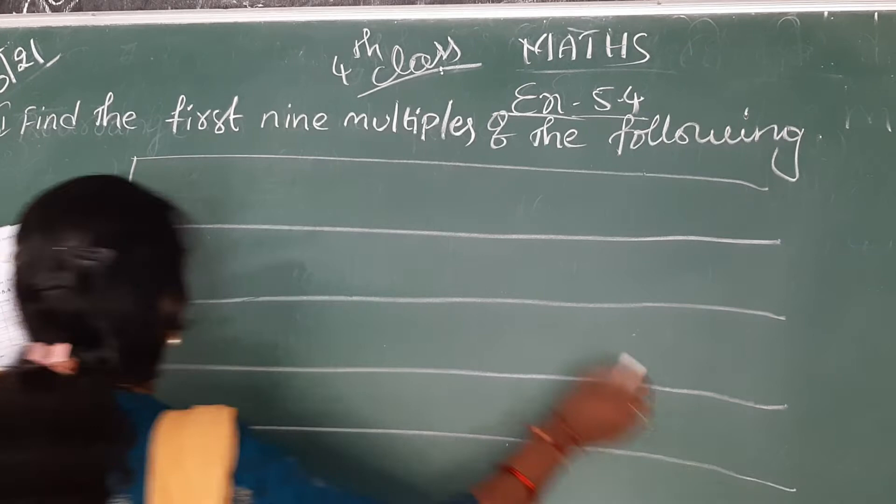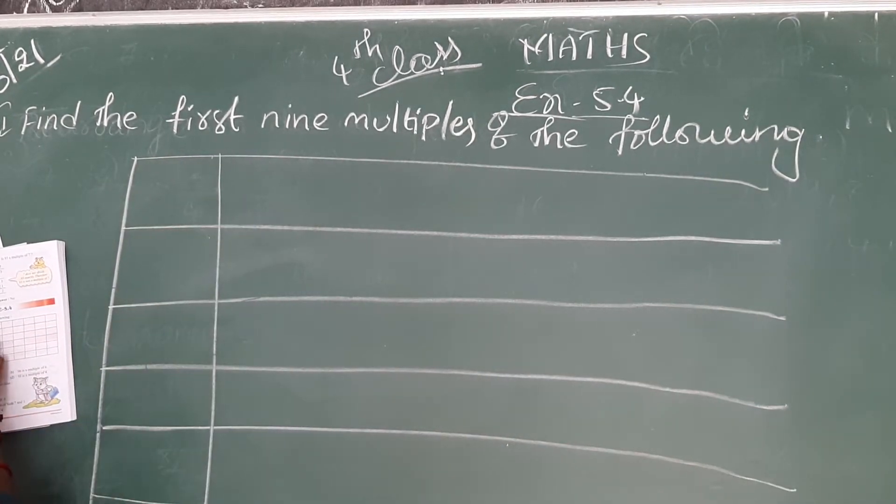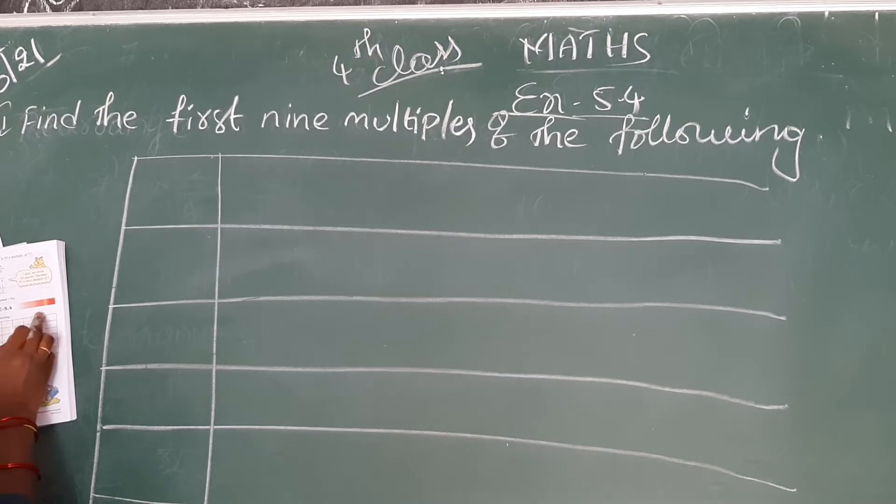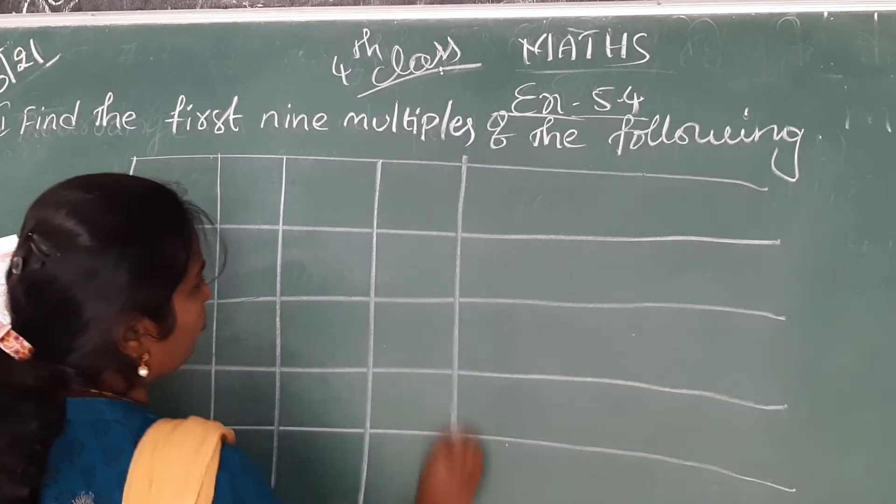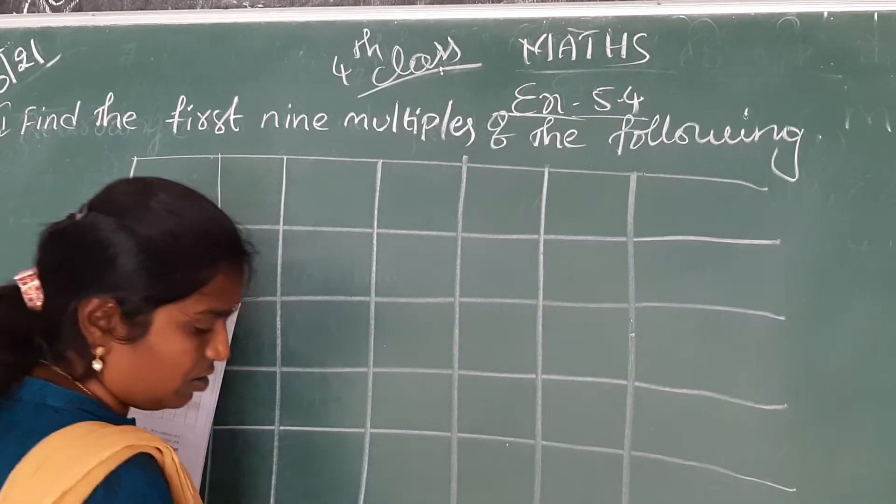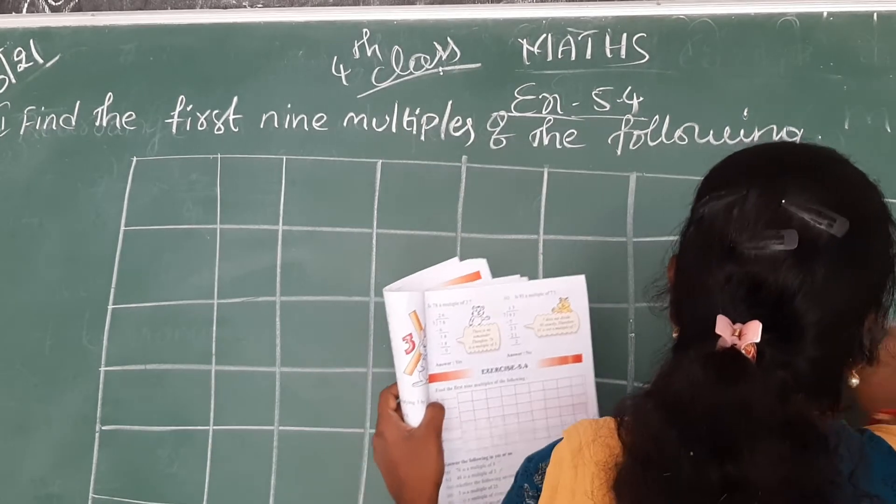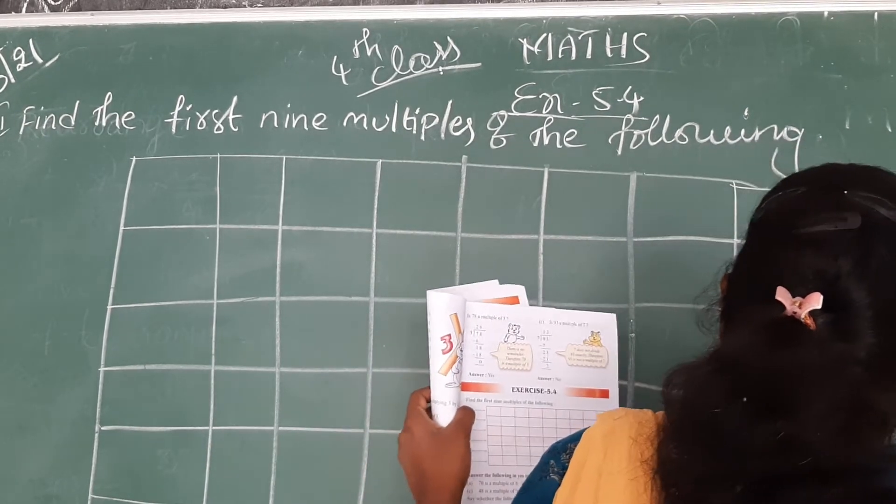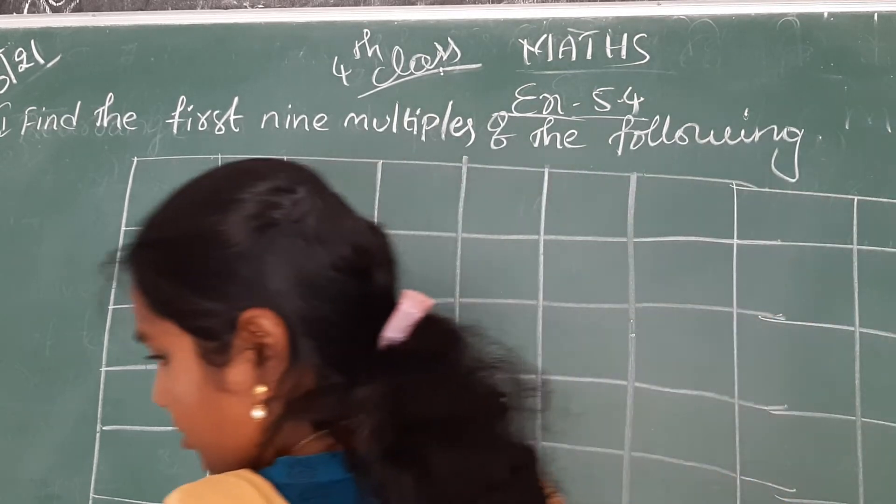One, two, three, four, five, six, seven, eight, nine. This is the table number.